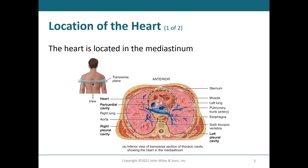This is a view of the heart from the inferior, kind of like what a CAT scan or MRI slice would look like. Here's the vertebral body up in the thoracic region — one of the thoracic vertebrae — and here's the spinal cord. The heart is in an area of the thoracic cavity called the mediastinum, which is behind the sternum and in front of the thoracic vertebrae, kind of in the middle. Part of the lungs are in the mediastinum as well.